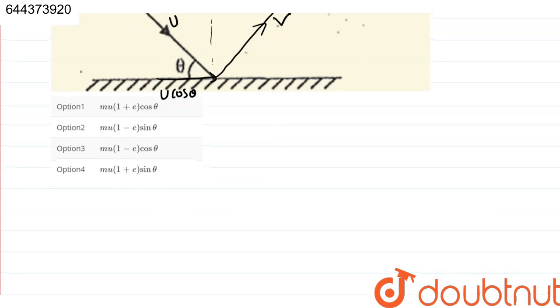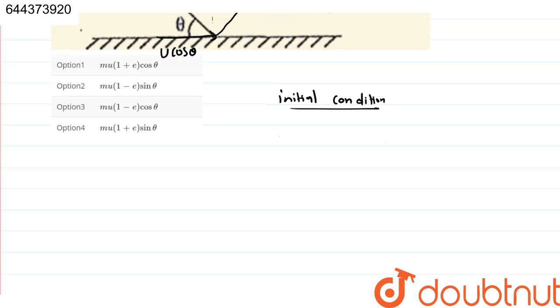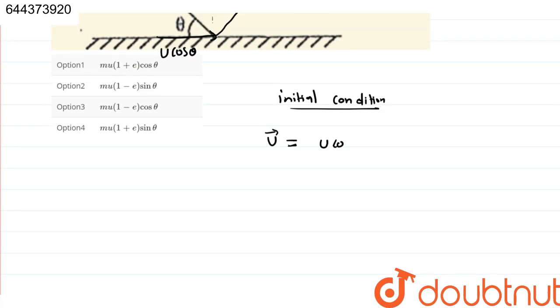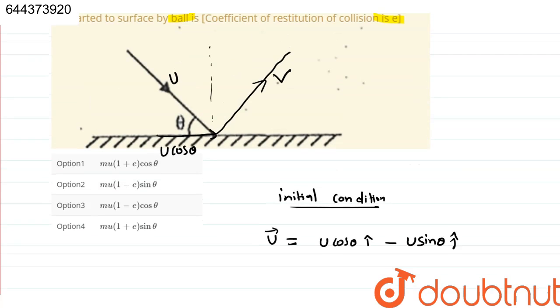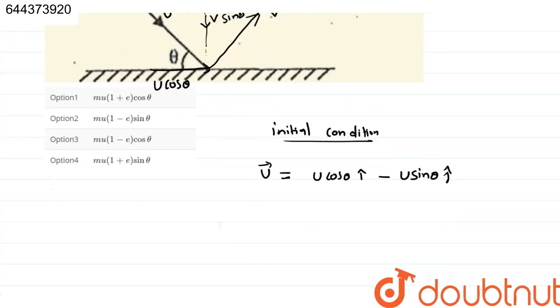So, initial condition velocity u is u cos theta i cap minus u sin theta j cap because this u sin theta, this will be in downward direction. Okay, this will be in downward direction. So, it will be minus j cap, so minus u sin theta j cap.